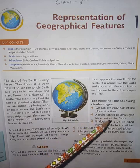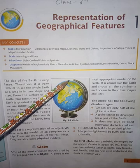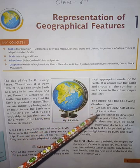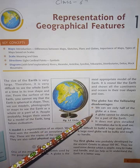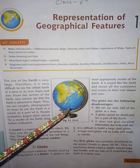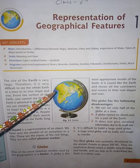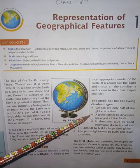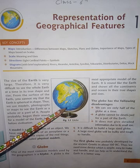There are a few disadvantages of the globe. First: we can see only half of the globe at a time. Second: a globe cannot be developed for a part of the earth — it shows the globe as a whole. Third: it does not give detailed information due to its small size. The globe is small in size, that is why detailed information about the earth is not provided.